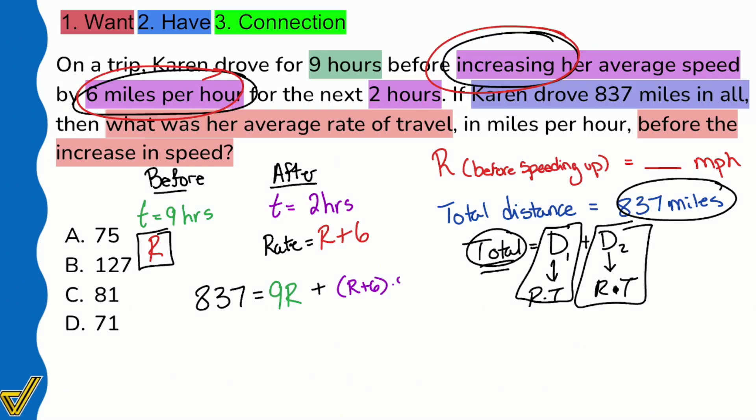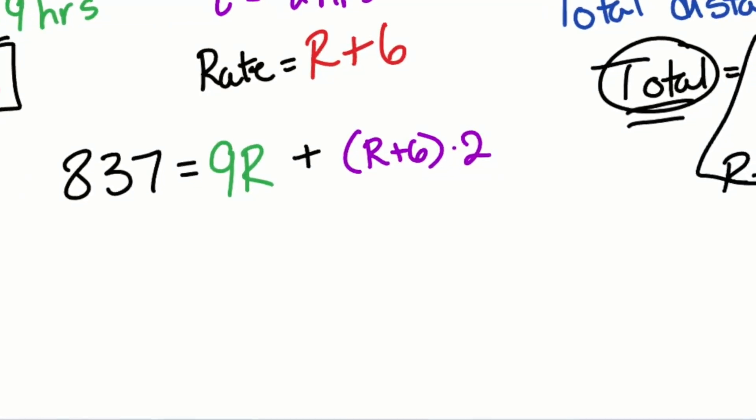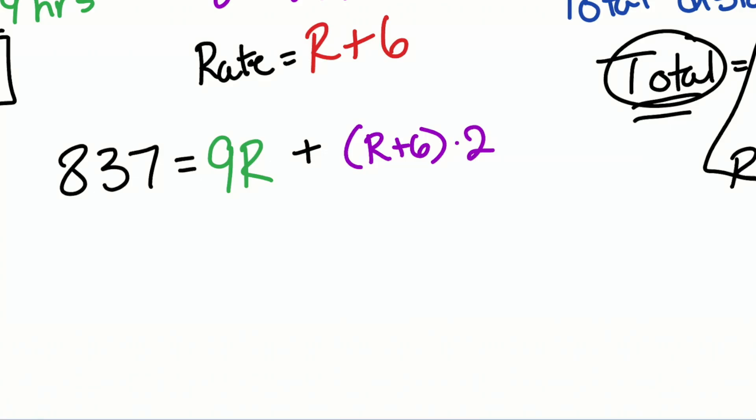After the speed increase, that'll be a time period of two hours and the rate is R plus six. So rate times time would simply be written as the previous rate plus six, and the time is two hours. I know that looks really weird, especially when we're so used to just working with one distance rate time formula. But in this problem to get the total distance you added those two previous distances, which can be represented as rate times time and rate times time.